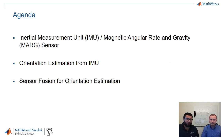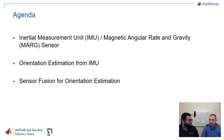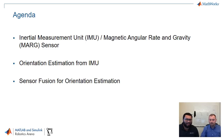For today's agenda, Roberto is going to go through what an inertial measurement unit is, and we're also going to talk about what a magnetic angular rate and gravity sensor is. These are pretty common sensors in autonomous vehicles and robots — basically used for orienting yourself with the environment. We're then going to go into orientation estimation for an IMU, and we've got a pretty cool demo lined up, followed by more sensor fusion for orientation estimation.